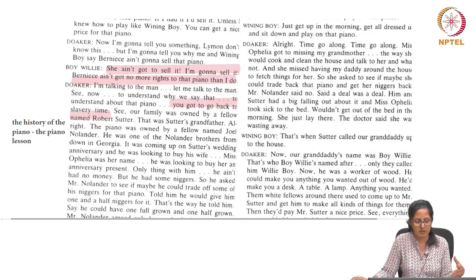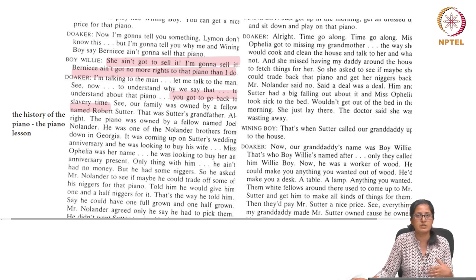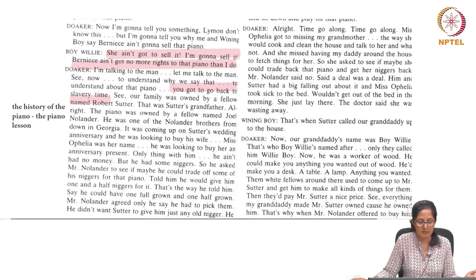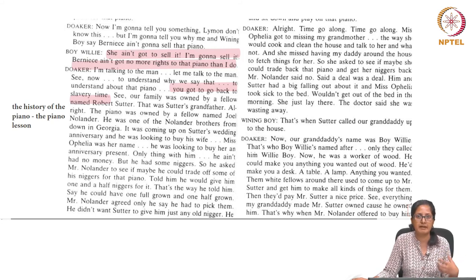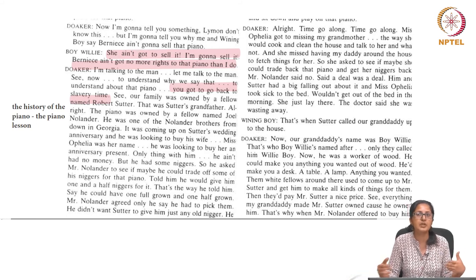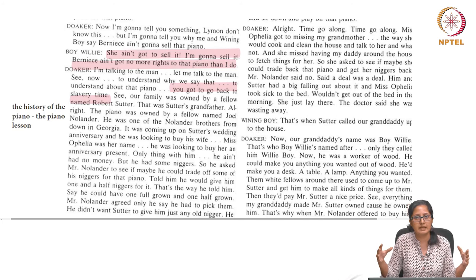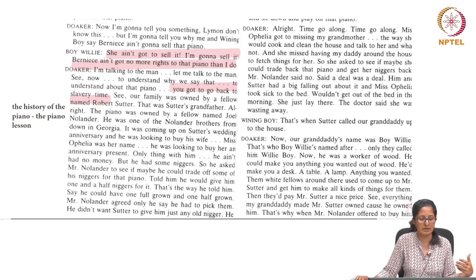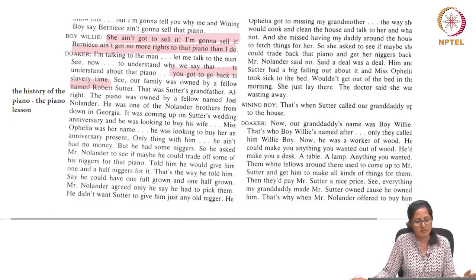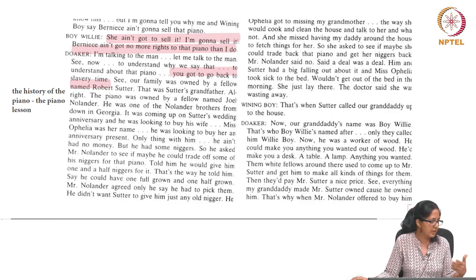To understand the piano, one must go back to slavery time. For the African-American family, time is divided between before and after slavery — a historical divider, even if slavery did not fully end with the Civil War. Doka explains that their family was owned by a fellow named Robert Sutter — that was Sutter's grandfather. This reminiscence is very different from the kind found in an Arthur Miller play. The piano was owned by a fellow named Joel Nolander, one of the Nolander brothers from Georgia.